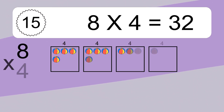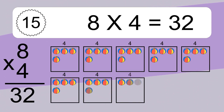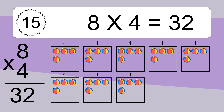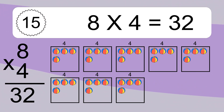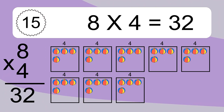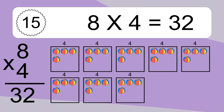8 times 4 equals what? 8 times 4 equals 32. We have 8 boxes and each box has 4 colorful balls inside. If you count all the balls in all the boxes together, you will have 8 times 4 balls. This equals 32 balls.